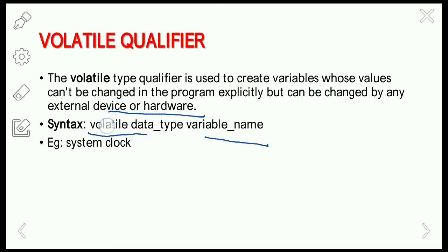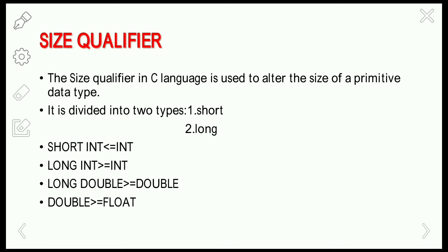A simple example of the volatile qualifier is the system clock. The system clock gets updated as soon as we connect to the internet, and all the sub-routines in the operating system execute based on the system clock. These routines get executed and interrupted based on this external hardware.